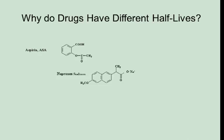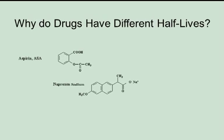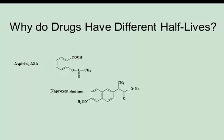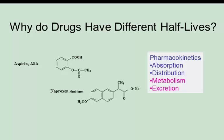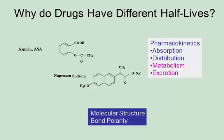A fair question to ask is why do drugs have different half-lives? On the screen are molecular structures for aspirin and Aleve, or naproxen sodium. Why they have different half-lives is complex and is answered by pharmacokinetics. Drugs are absorbed differently in our body, they're distributed differently, our body metabolizes them differently, and they're excreted differently. There's also something very important that we'll learn in the future that has to do with molecular structure and bond polarity.